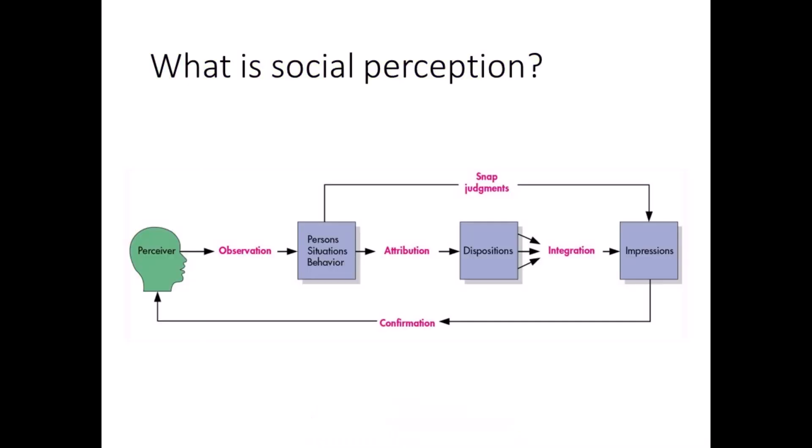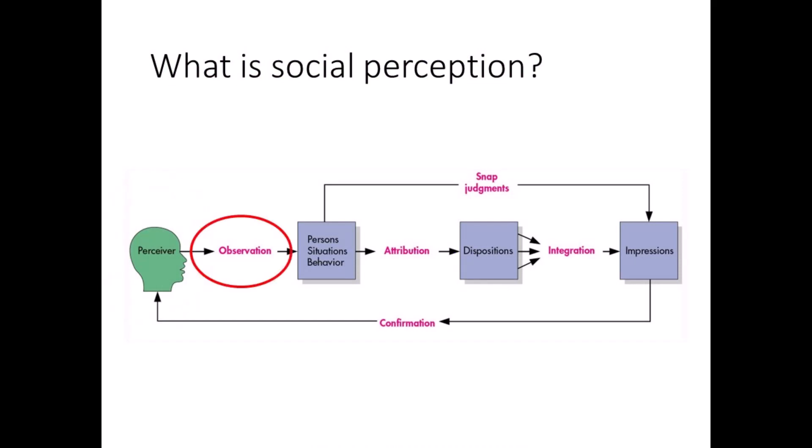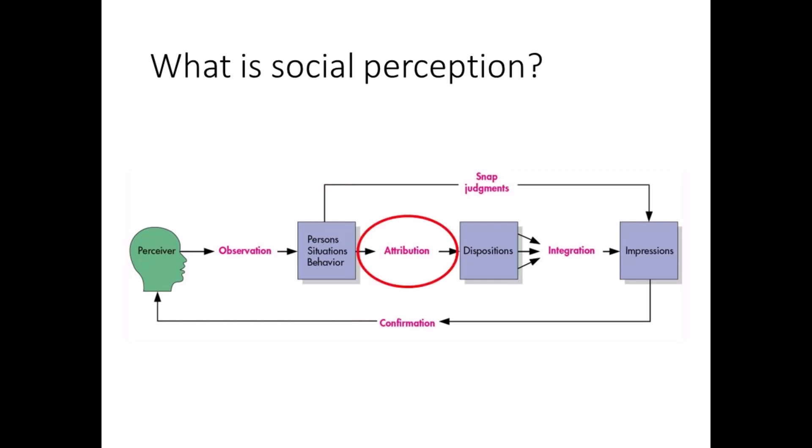This figure illustrates the process of social perception. It starts with the perceiver. We observe other people — what they say and how they act. Based on the target's personal characteristics and behaviors, as well as the situation, we make judgments about the target's disposition, their character.